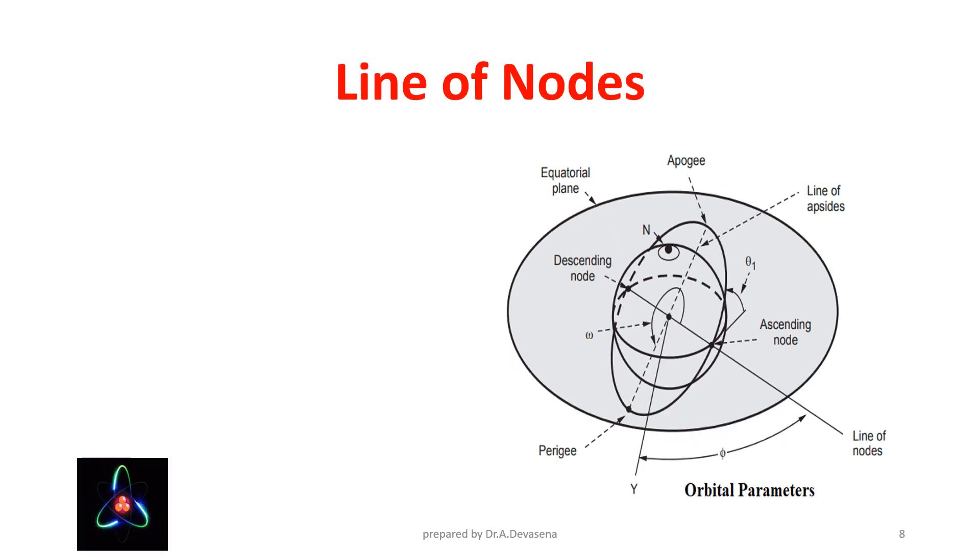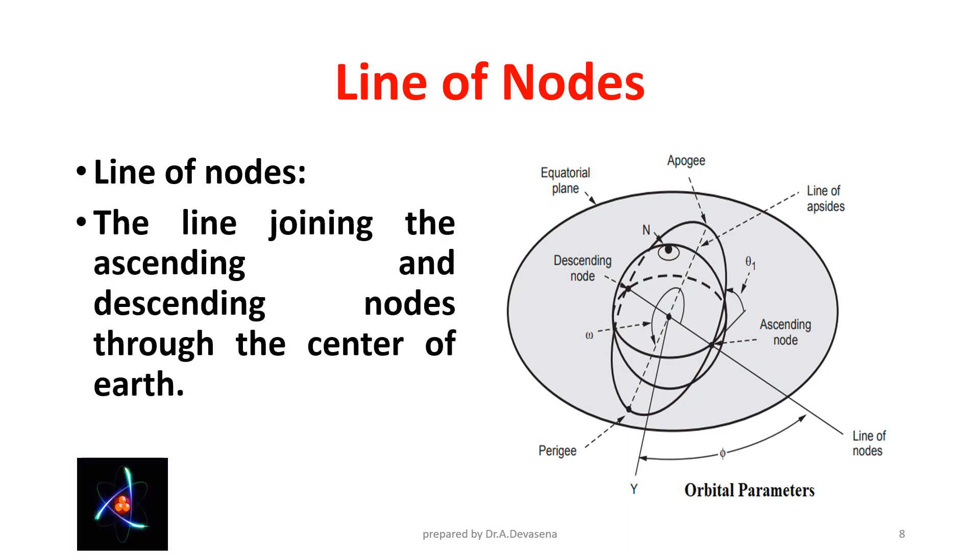Line of Nodes. The line joining the Ascending and Descending Nodes through the center of Earth is represented as Line of Nodes. Here it is indicated.